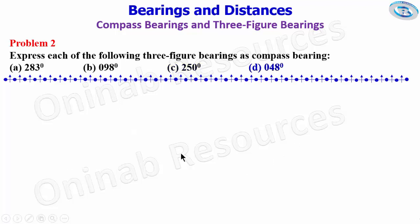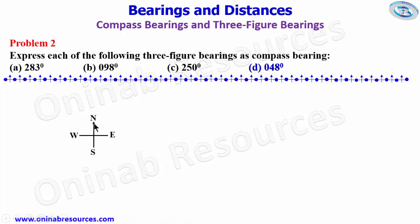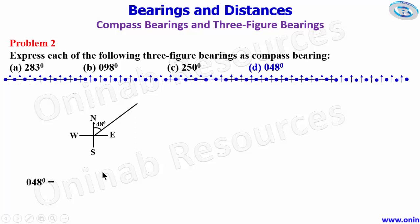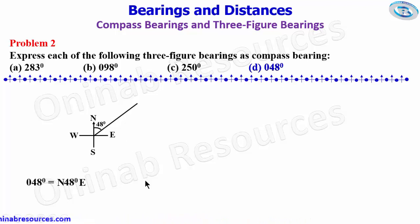For D, we have 048 degrees. Starting from the north, we measure an angle of 48 degrees, then stop and draw the line. The compass bearing equivalent of 048 degrees is north 48 degrees east. And that's all for Problem 2.